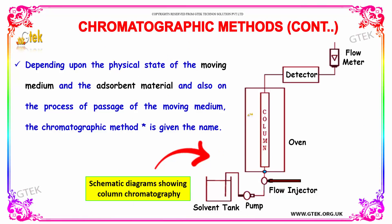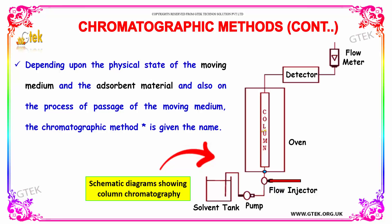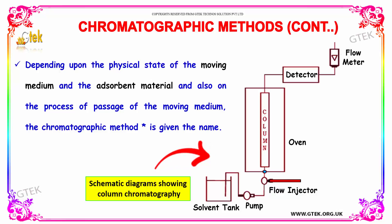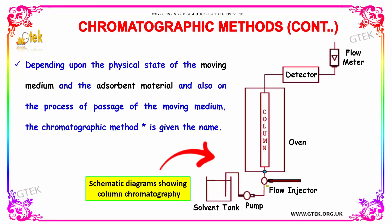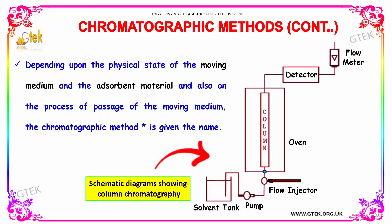Depending upon the physical state of the moving medium and the absorbent material, and also on the process of passage of the moving medium, the chromatographic method's name is given. Here is the flow meter and detector. You have the column with the oven, flow, injector, pump and solvent tank. This is the schematic diagram showing column chromatography.